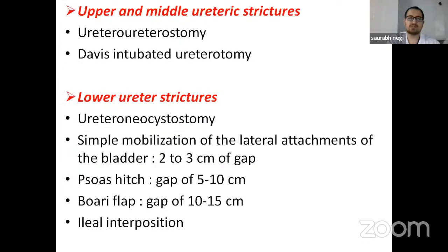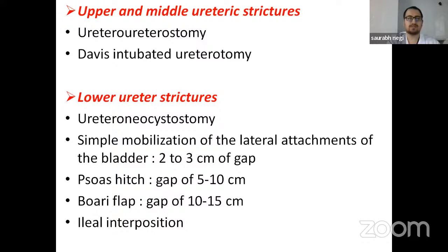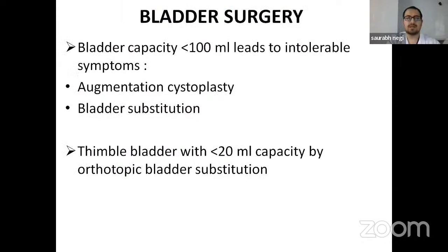For upper and middle ureteric strictures, ureterostomy or Davis intubated ureterostomy may be required. For lower ureteric strictures, procedures depend on the length of the defect and may include ureteroneocystostomy, Psoas hitch, Boari flap, or ileal interposition. Bladder surgeries are required when capacity becomes less than 100 ml with intolerable symptoms, including augmentation cystoplasty and bladder substitution. In case of a thimble bladder with capacity less than 20 ml, orthotopic bladder substitution is required.